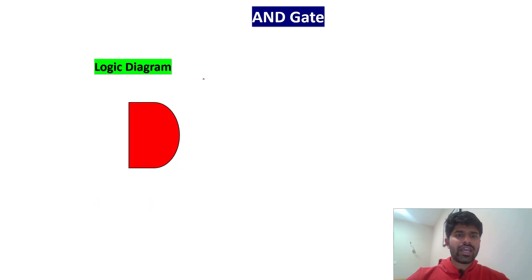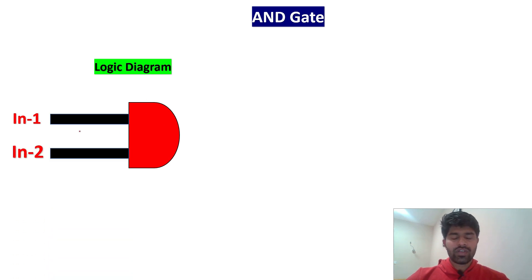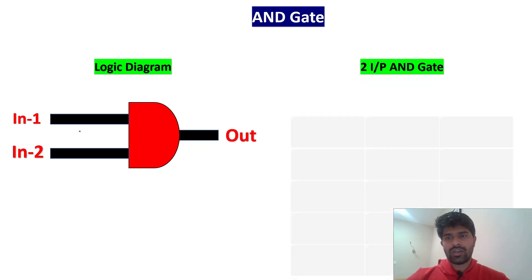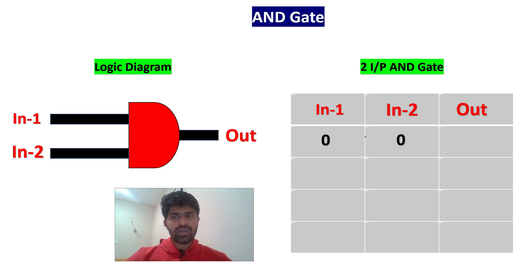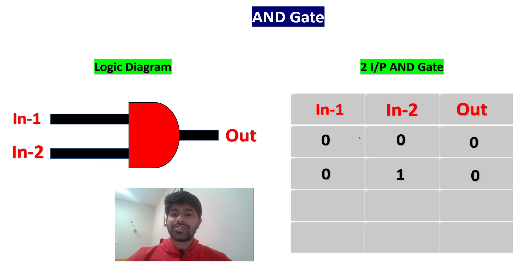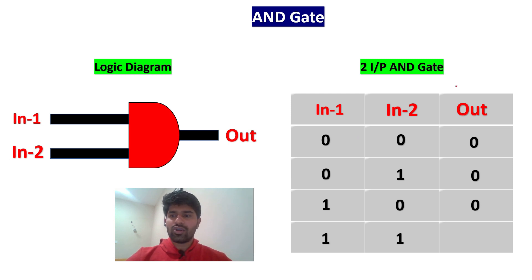First one: AND gate. This is the logic diagram — this is the symbol of AND gate. It will be having two inputs. Input one, input two, and output. How AND gate will work: if input one is zero and input two is zero, output will be zero. If input one is zero and input two is one, output is also zero. If input one is one and input two is zero, output is also zero. But when both inputs are one, then only output will be one. This is how the AND gate works.